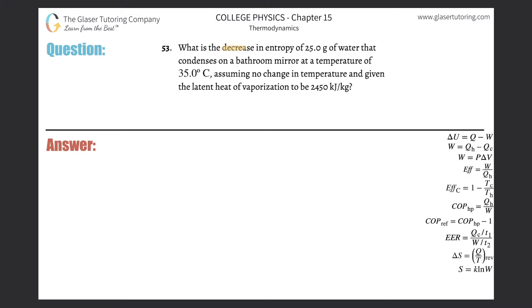Number 53: What is the decrease in entropy of 25 grams of water that condenses on a bathroom mirror at a temperature of 35 degrees Celsius, assuming no change in temperature and given the latent heat of vaporization to be 2450 kilojoules per kilogram?